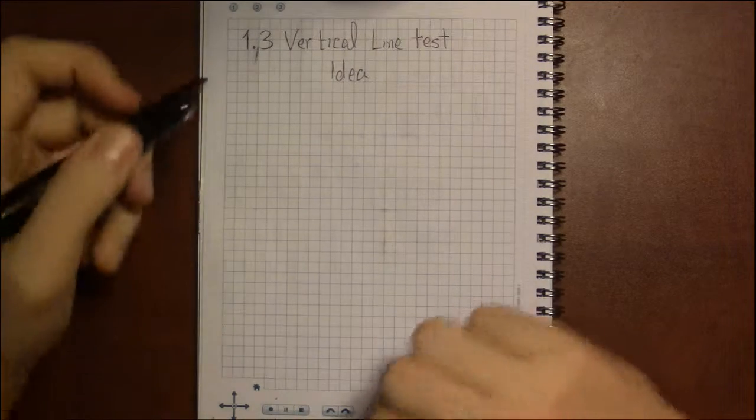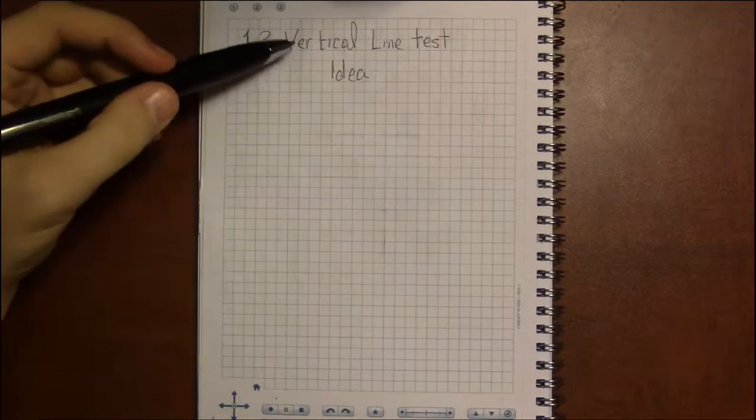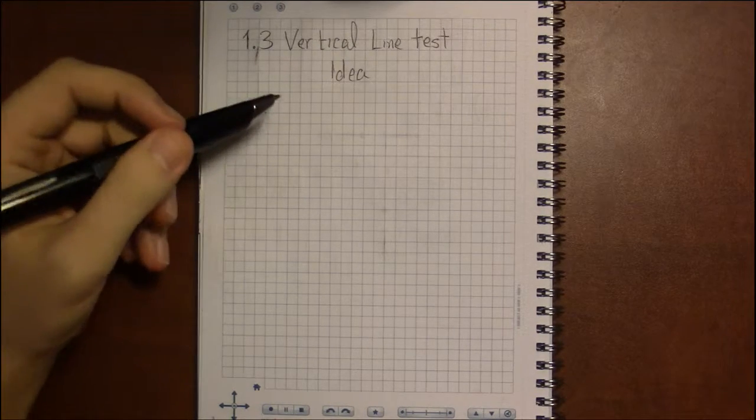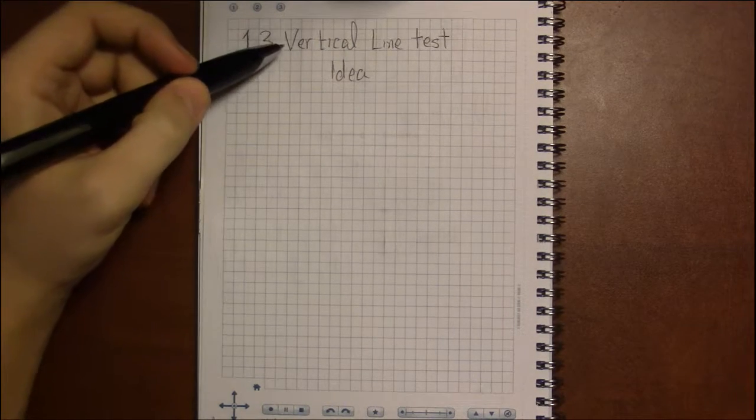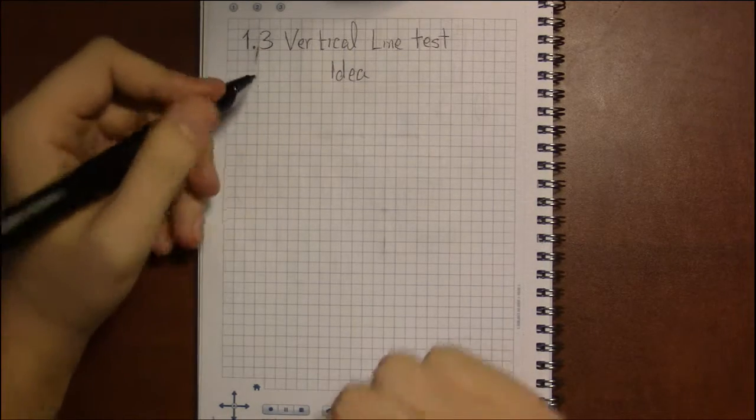All right, so the last topic I want to go over in section 1.3 is what's known as the vertical line test. The vertical line test is a way to tell graphically whether a graph is a function or not.